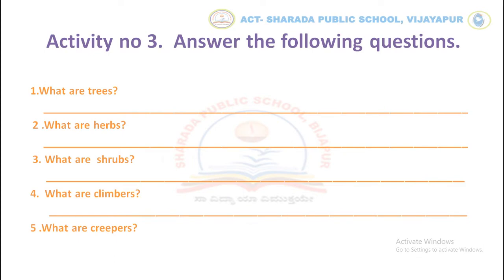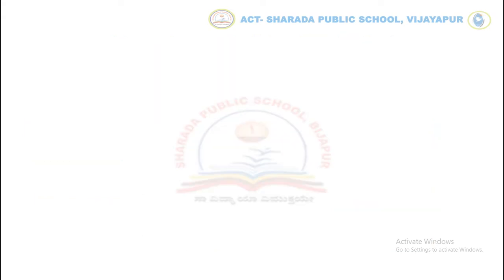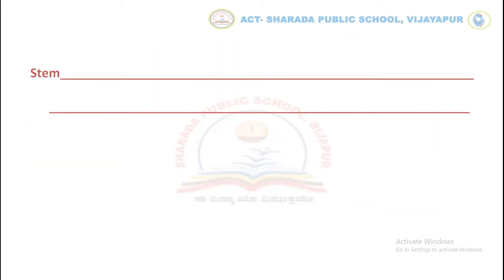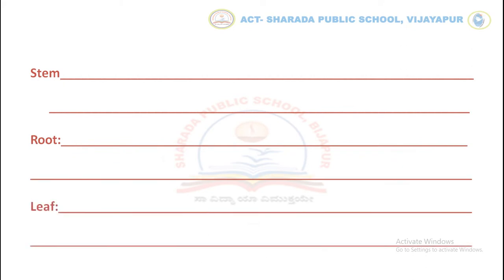Let's move to activity number four. In this activity you have to label the parts of a plant and write their functions. Identify the parts of the given plant and write them in the boxes. After labeling the diagram, write the functions of stem, root, and leaf in the given space.